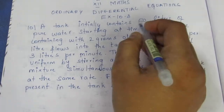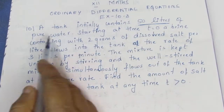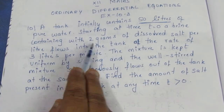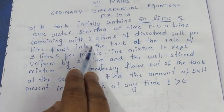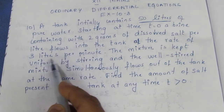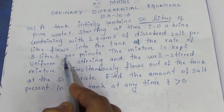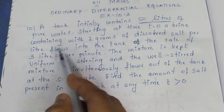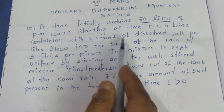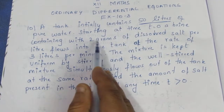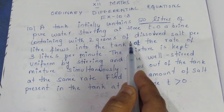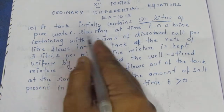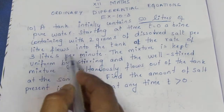So there is 50 liters of pure water in the tank. Into this, brine with 2 grams of dissolved salt per liter flows in at the rate of 3 liters per minute. That means in 1 minute, 3 liters flow in. Since there are 2 grams per liter and 3 liters flow in, we get 6 grams of dissolved salt flowing into the tank per minute.